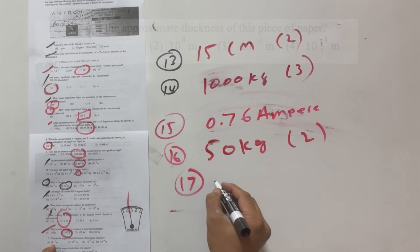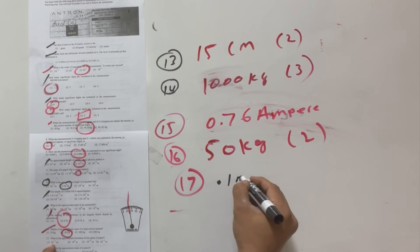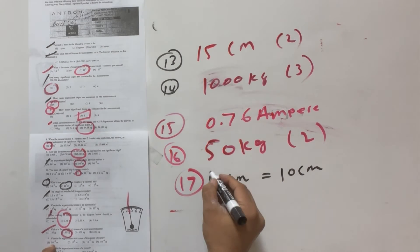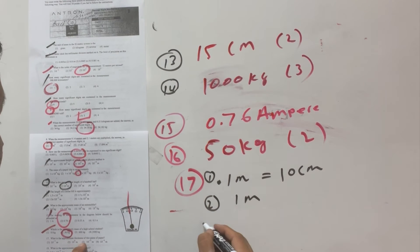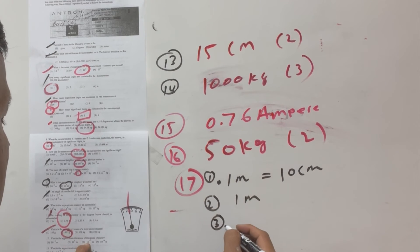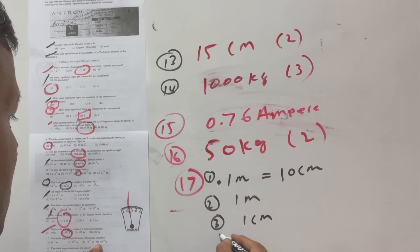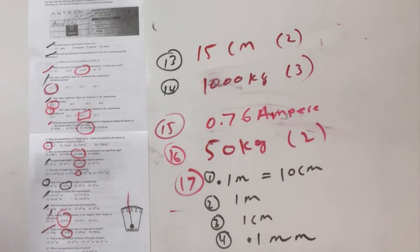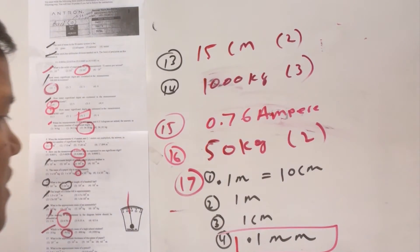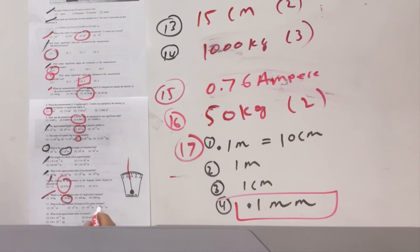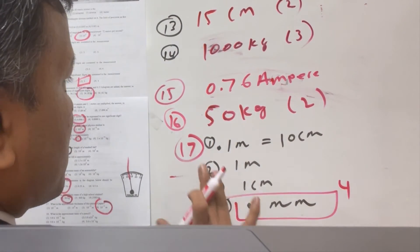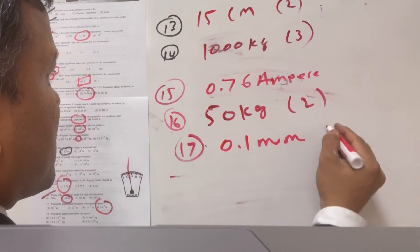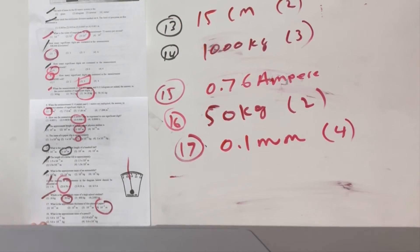Number seventeen: the approximate thickness of a sheet of paper. Options are 0.1 meter (about 10 cm), 1 meter, 1 centimeter, and 0.1 millimeter. The thickness of paper is 0.1 millimeter — option number four.